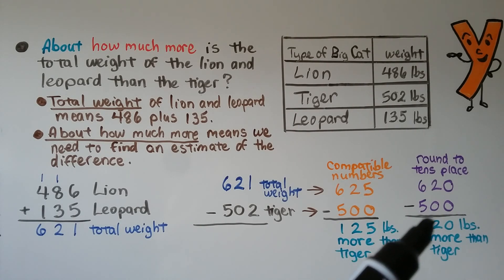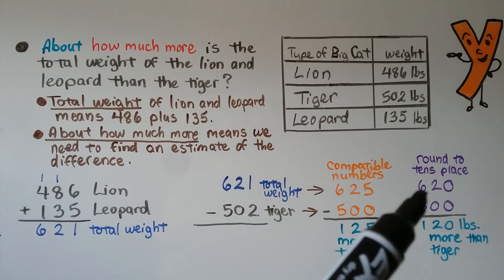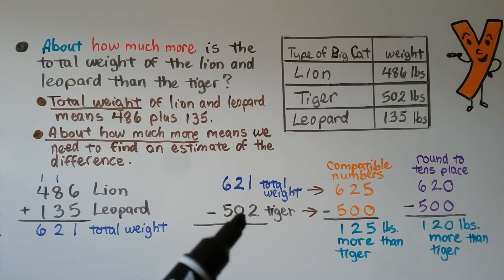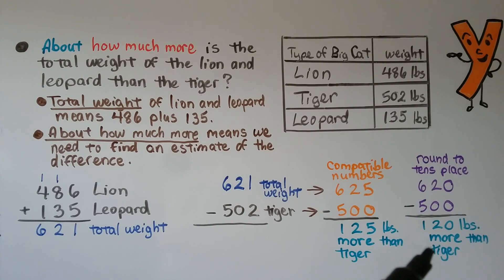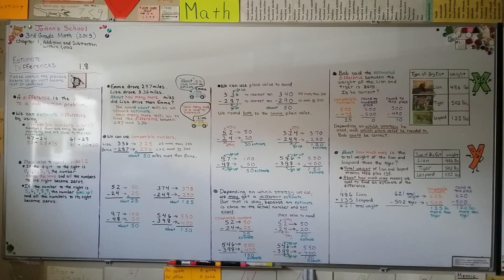If we round to the nearest tens place, the 1 tells the 2 to stay the same and turns into a 0, so 621 rounds to 620. The 2 tells the 0 to stay the same, so 502 rounds to 500. Rounding to the tens place gives us 120 pounds more than the tiger. We can estimate differences using compatible numbers or place value to round, but remember the estimates may be different depending on the strategy and the place value that we're rounding to.